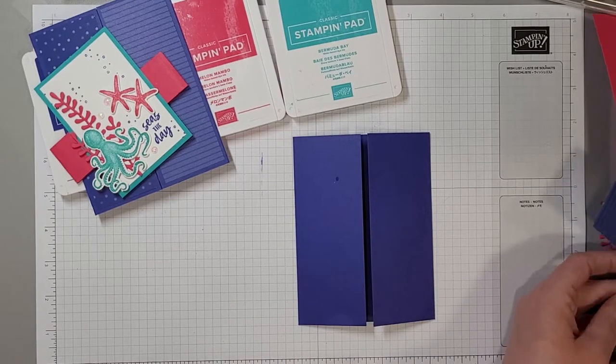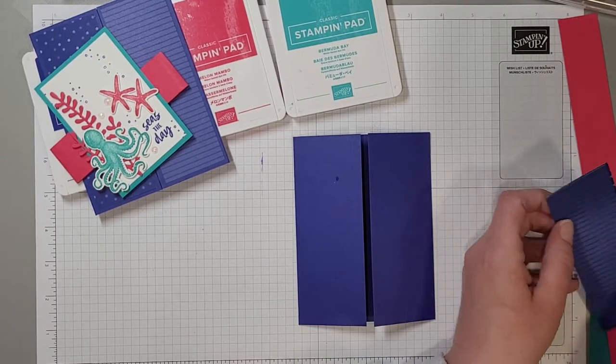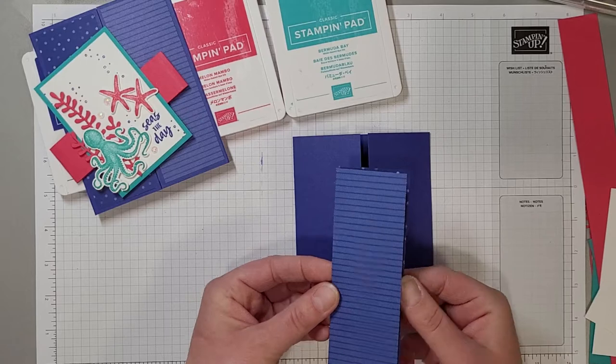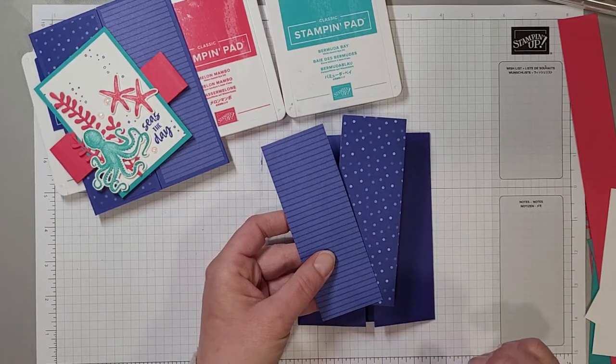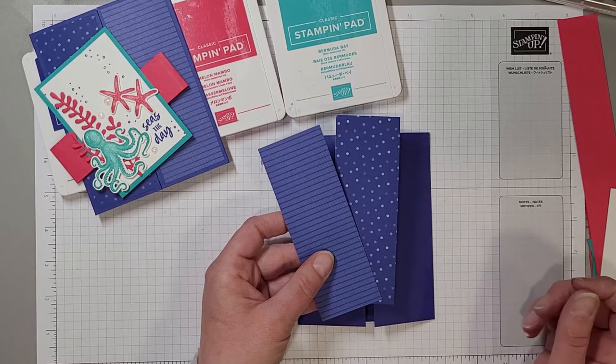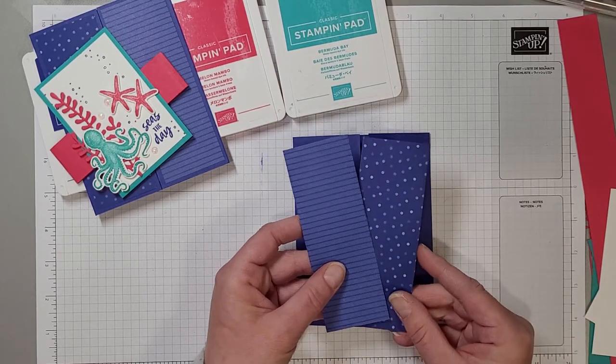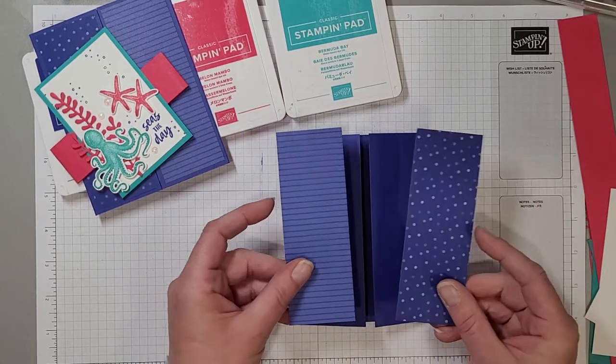Okay so the next thing we want to do is we're going to put these DSP panels on the front. Now these two pieces are from the 2022-2024 in color six by six designer series paper packages.